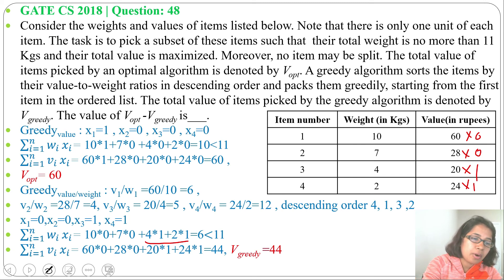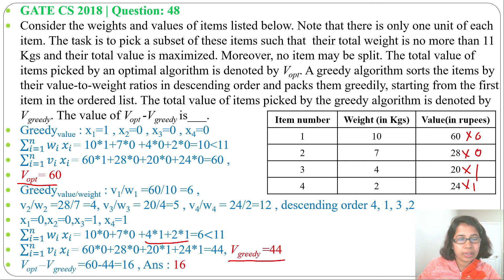We found optimal value 60 and greedy value 44. Next we need to subtract. So 60 - 44 = 16. Answer is 16.